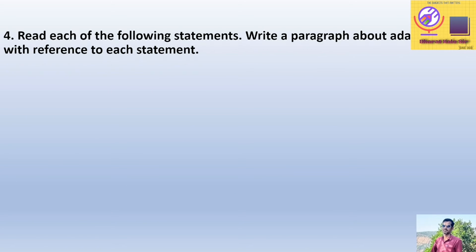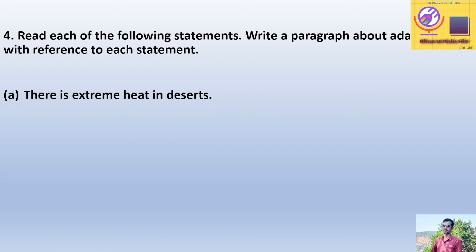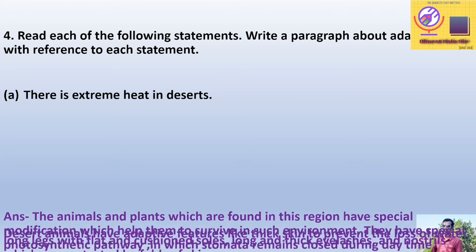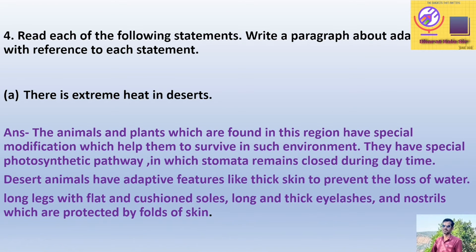Question 4: Read each of the following statements and write a paragraph about adaptation with reference to each statement. Statement A: There is extreme heat in the desert. Answer: The animals and plants found in this region have special modifications which help them to survive in such an environment.